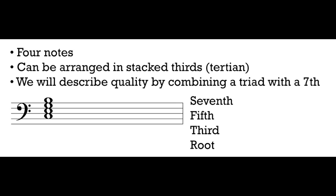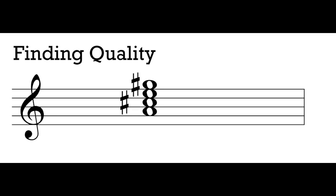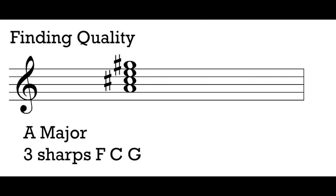Let's talk about how we're going to find the quality of these different 7th chords. Finding the quality of the 7th chord is going to be very similar to finding the quality of a triad — we are going to rely on the intervals. The intervals are going to tell us what kind of 7th chord we have, and the different intervals give our different 7th chords very unique sounds. When we're calculating intervals, we always start in the key signature of the bottom note. That's going to tell us what type of interval we have. My bottom note in this 7th chord is A, so I'm going to be thinking about A major — that key signature has three sharps: F, C, and G.